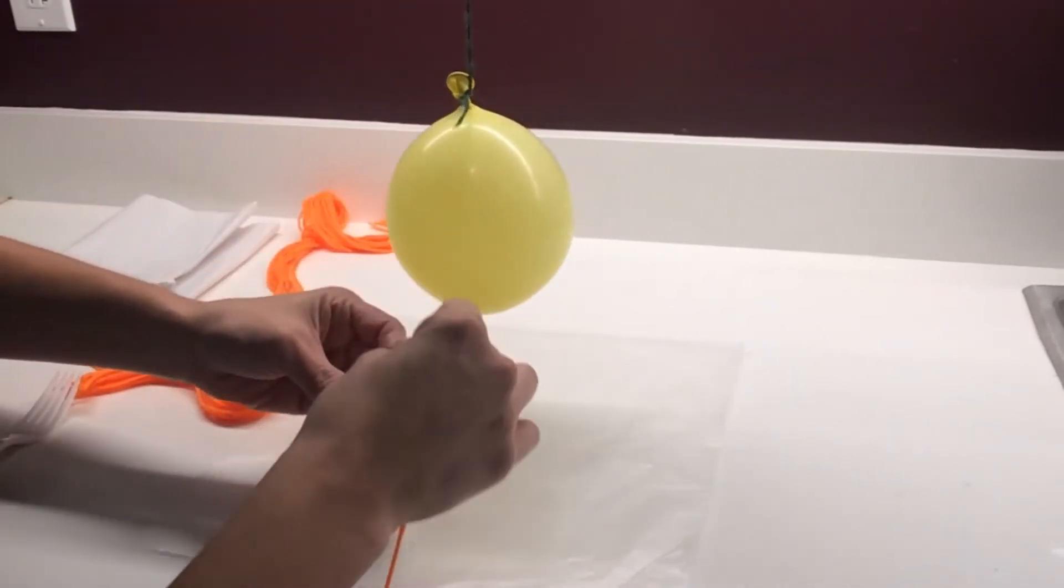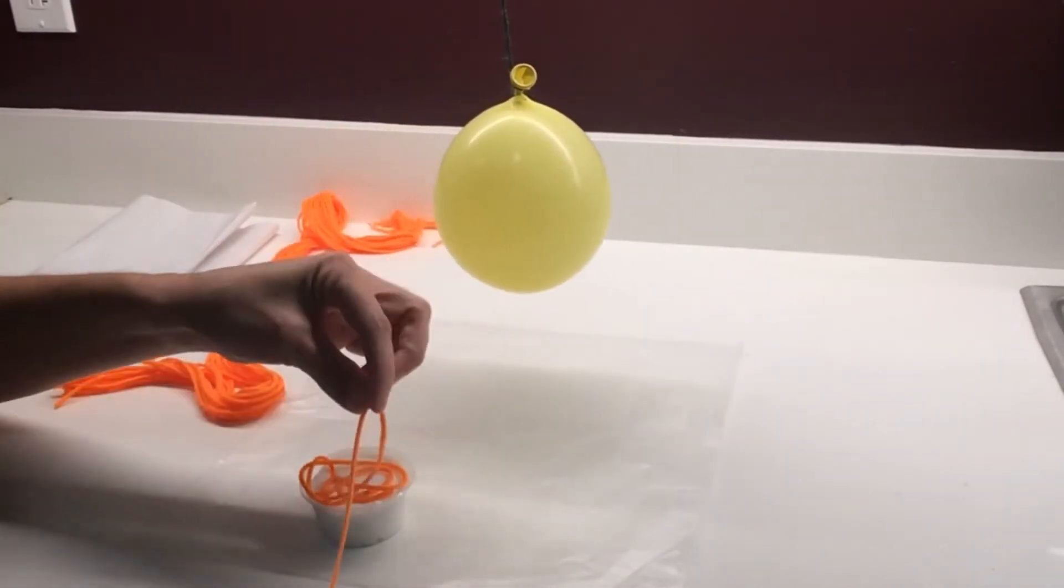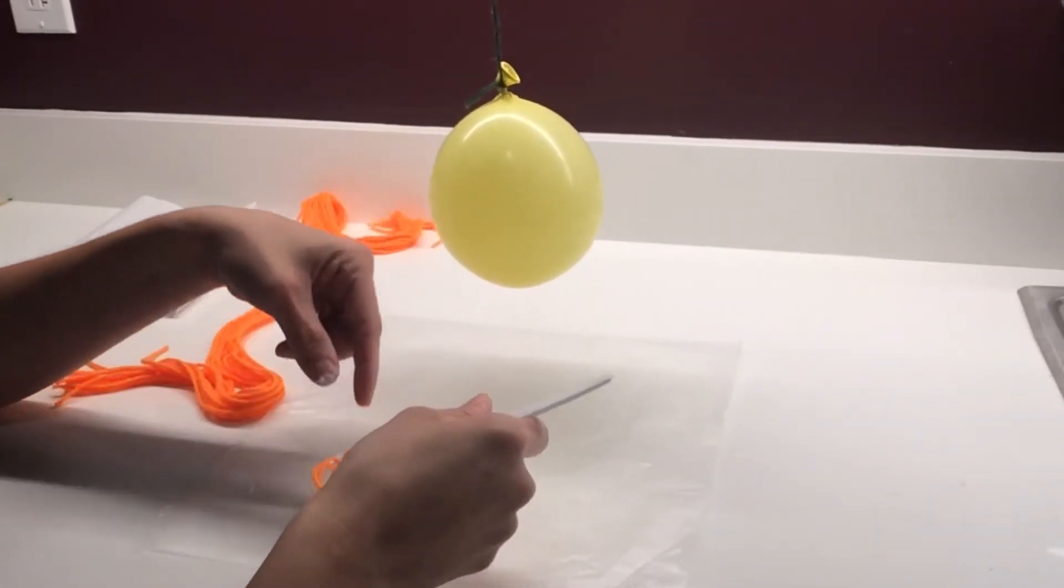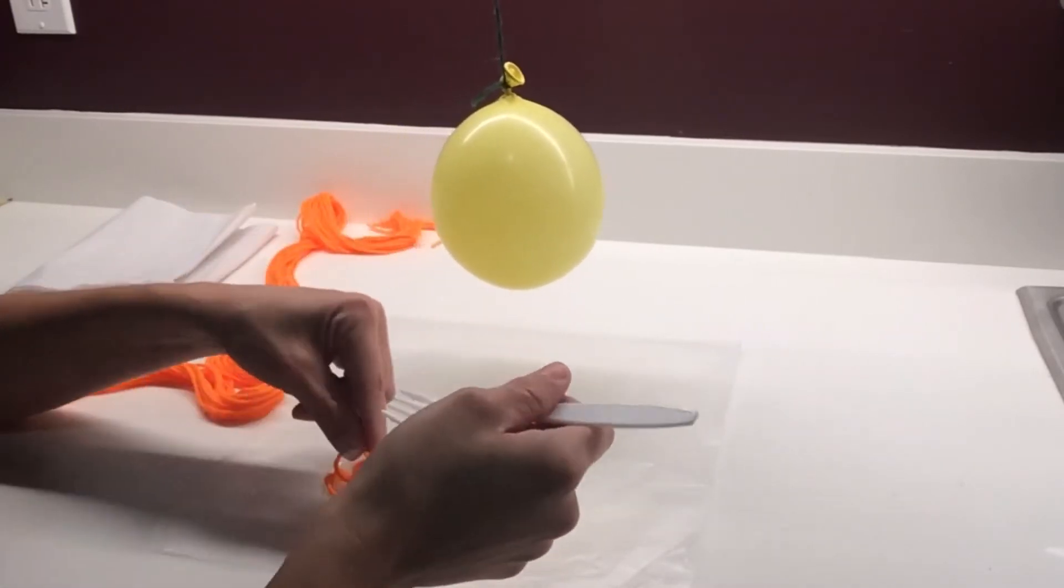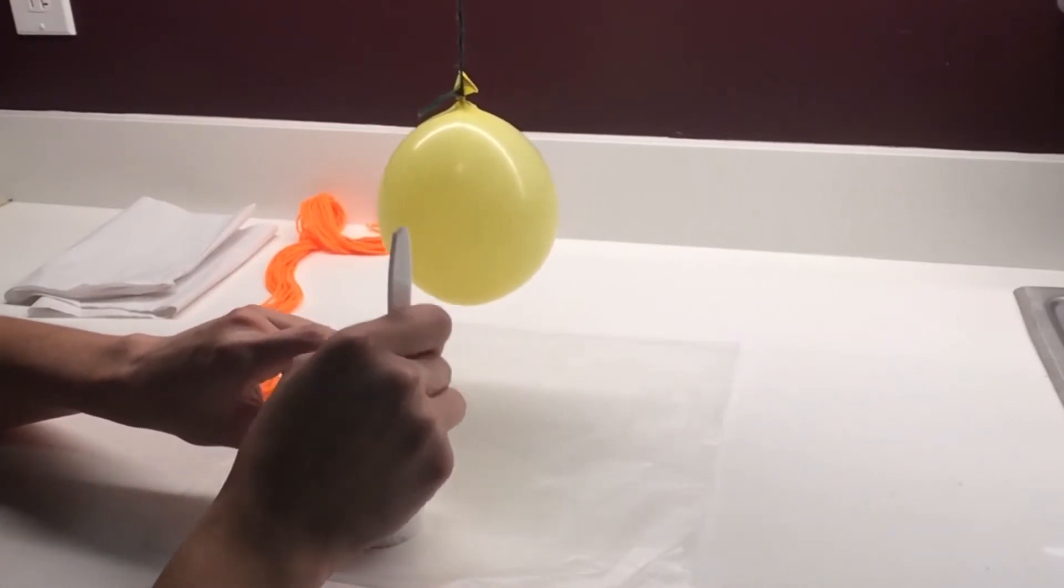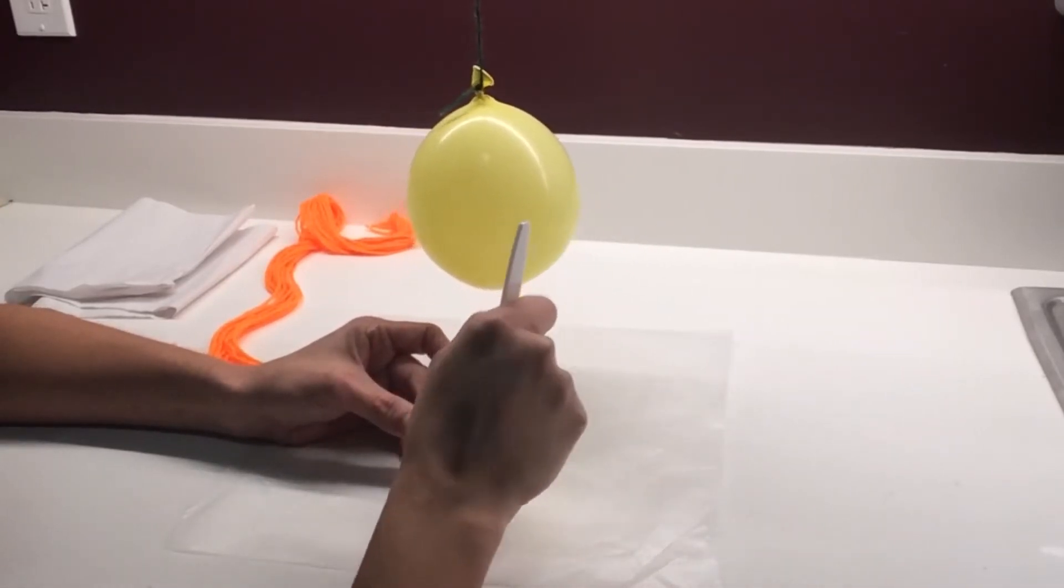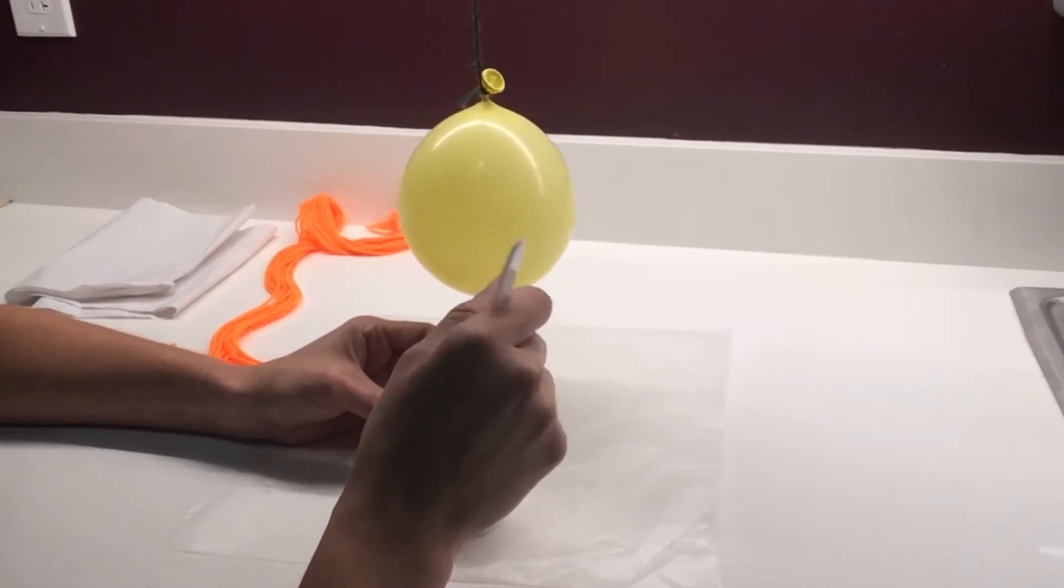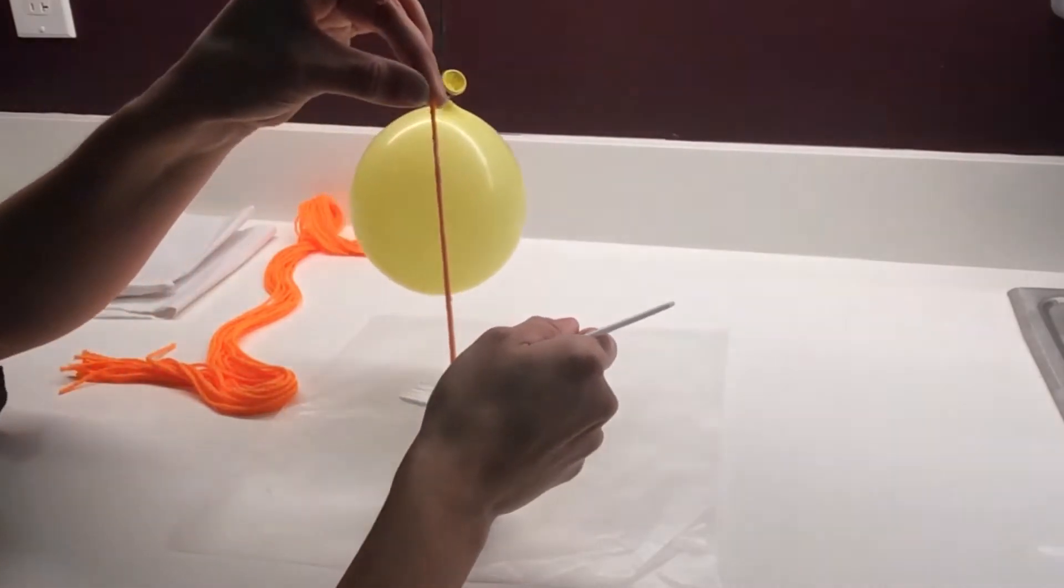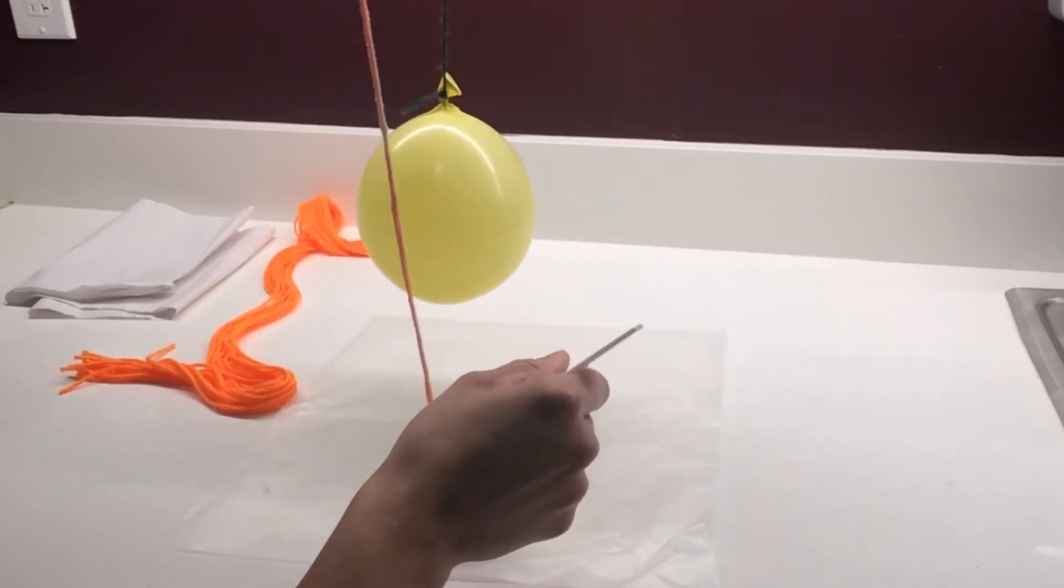Make sure you have your paper towels on hand in case it gets messy. So you can use your fork to push the yarn into the glue and get it fully saturated. Then take the yarn out and as you're pulling it up, use the tines of the fork to drag the extra glue off the yarn.